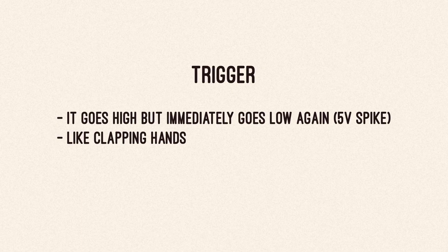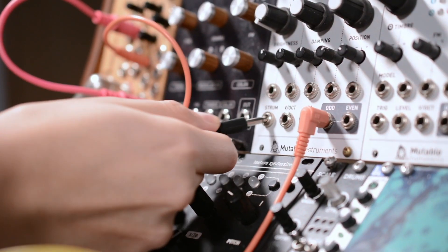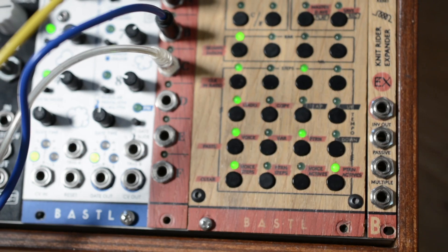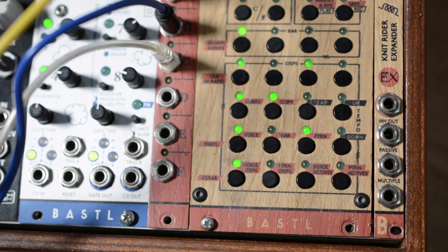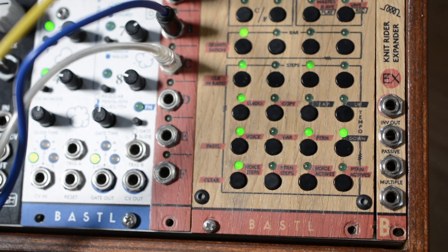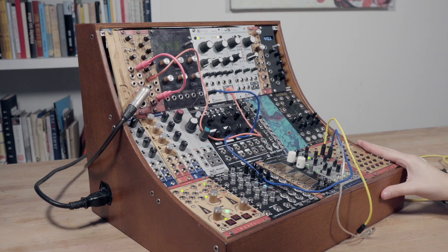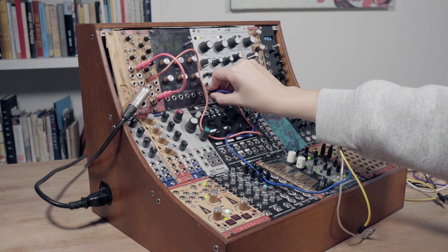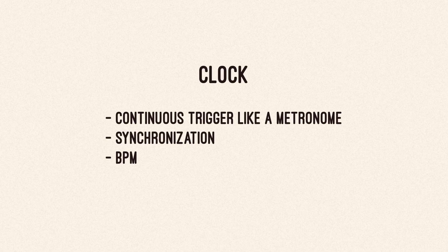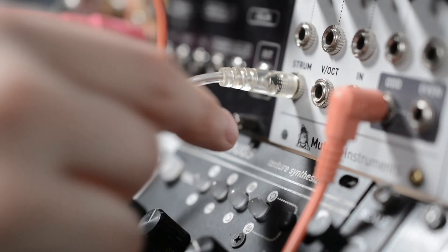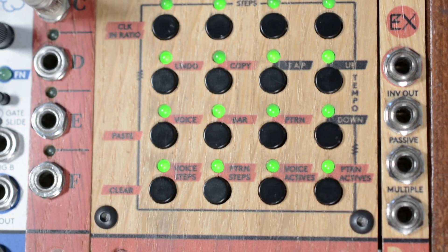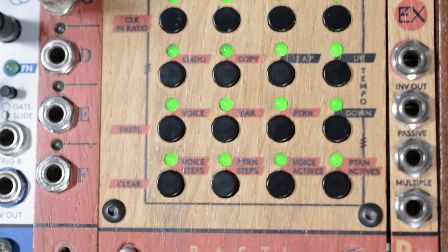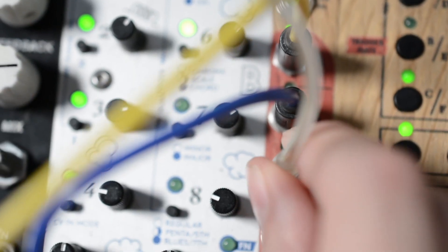A special type of gate is a trigger. It goes high, but immediately goes low again — so it's a 5V spike. It's more like a sudden burst, like clapping your hands or hitting a drum. And there is the clock. It's a continuous gate or trigger and we can think of it as a metronome for modulars. You can use it to synchronize sequencers or LFOs.